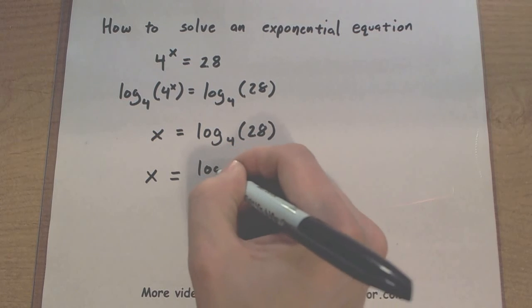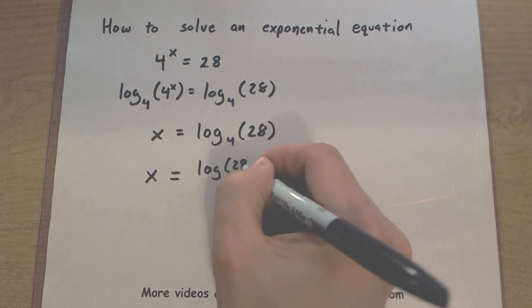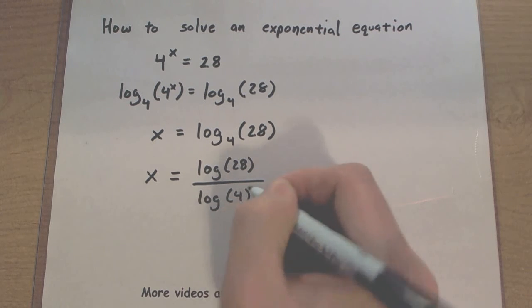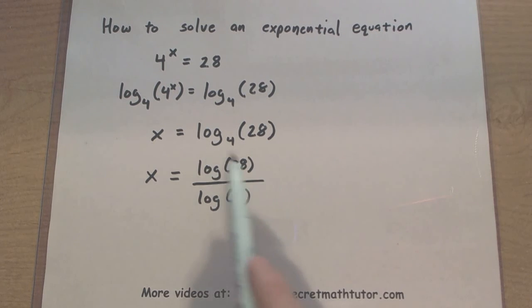So I'd change this into a log of 28, divided by a log of 4. And I'd basically do that so that I could then punch it into my calculator. I'd punch in log of 28, divided by log of 4.